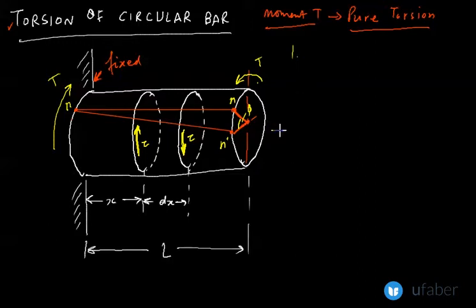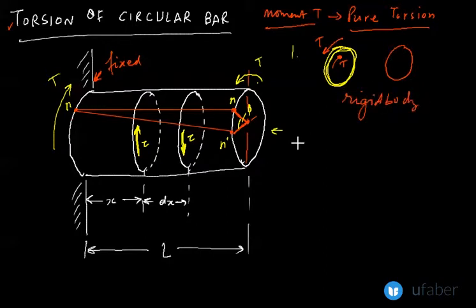If you're looking at the cross-section from this end, it looks like a circle and it's plain. Now, as it is being subjected to torsion, it will still remain circular and plain. It will not change its shape as it will behave as a rigid body. So this is one consideration that we take into account.